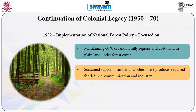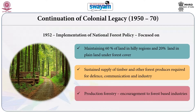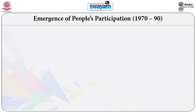The forest policy of post-independent India emphasized production forestry, meaning encouraging forestry to support the process of industrialization. Encouragement was given to forest-based industries like the rubber industry, resin industry, and paper industry. Forests were considered as raw material to be used in these forest-based industries.